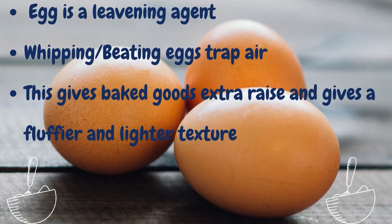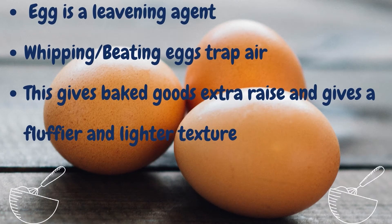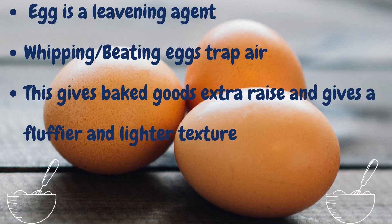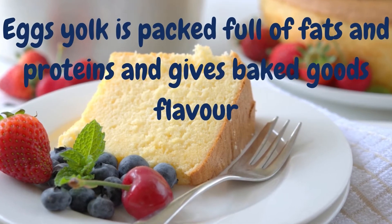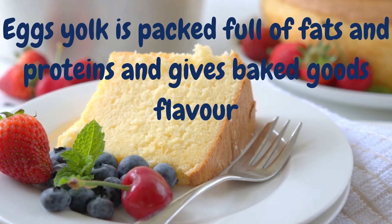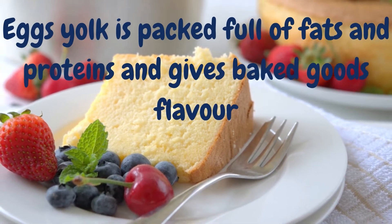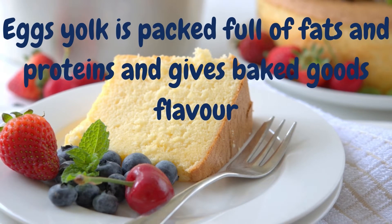That's why egg is very crucial in baking. It's also a leavening agent — if you whip up eggs, in particular egg whites, you'll see that it has an extra rise and this gives your cake a fluffy and lighter texture. Egg also has lots of flavour because it's packed full of fat and protein, so eggs in your cake give it that added oomph and flavouring.